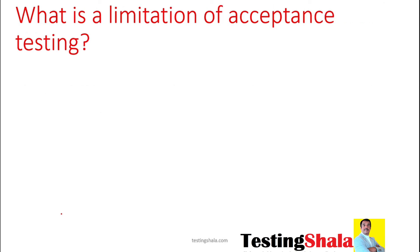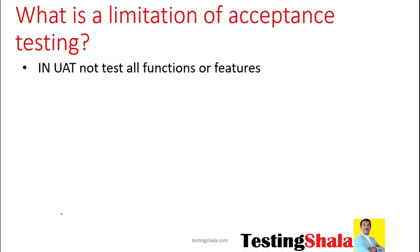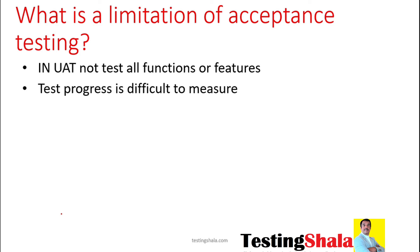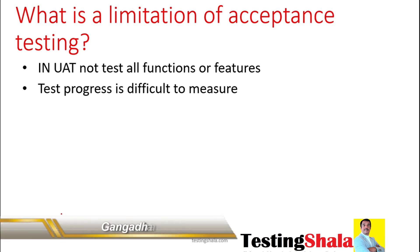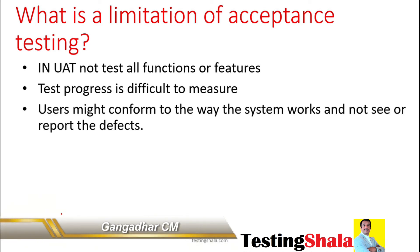What are the limitations of acceptance testing? The main limitation is we cannot test everything — not all functionals or all features — as part of UAT, because that is not the expectation either. Even tracking the overall progress of acceptance testing is not very easy, because we are only focusing on certain business processes and certain business flows, making it difficult to track the overall testing progress.